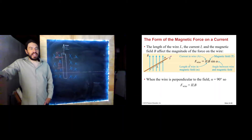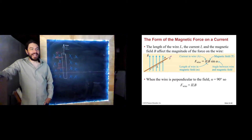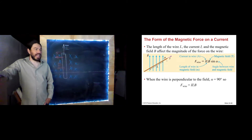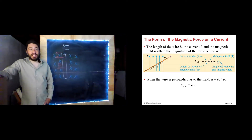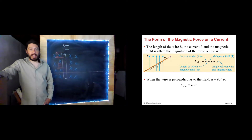Here we see the equation for it, and notice it looks very similar to the force on an individual charge. It is just the current times the length times the magnetic field. The magnetic field and the length may not be perpendicular, so we throw a sine alpha in there. Just like for a moving solitary charge, if alpha is zero, that means I and B are parallel and there is no force. So there's no force on a current-carrying wire when the current is parallel to the field.